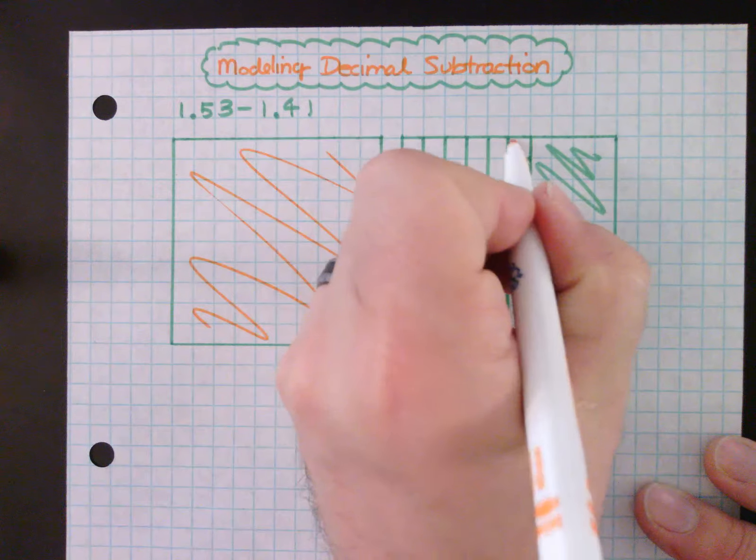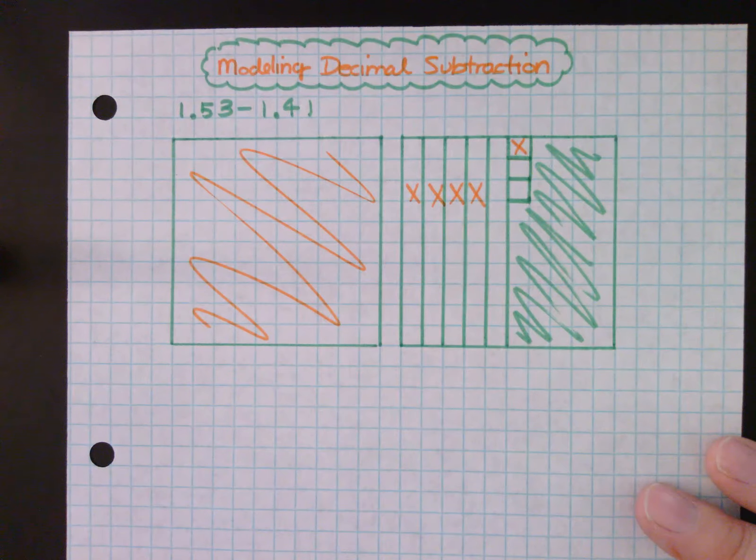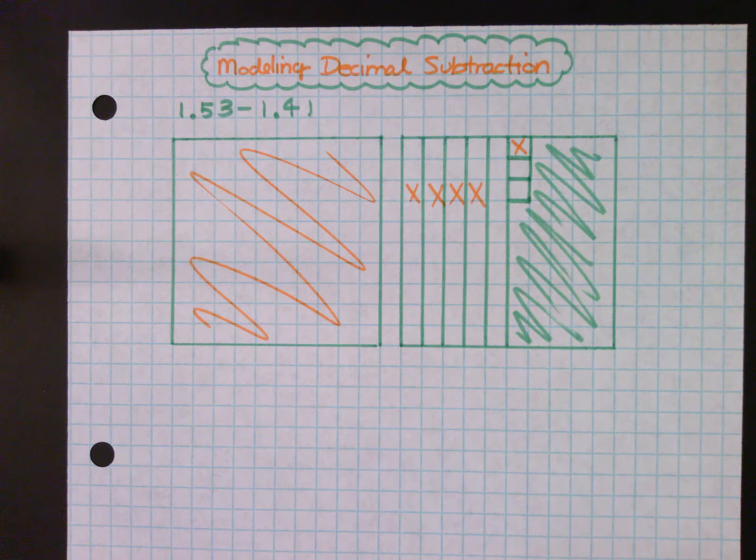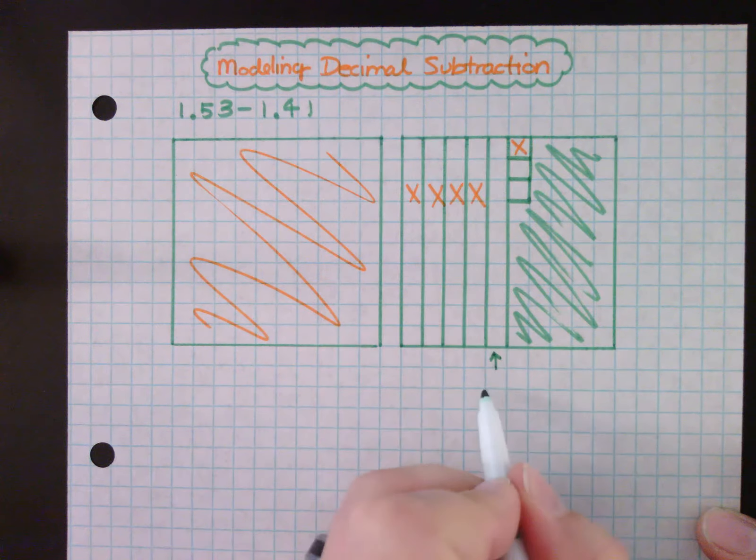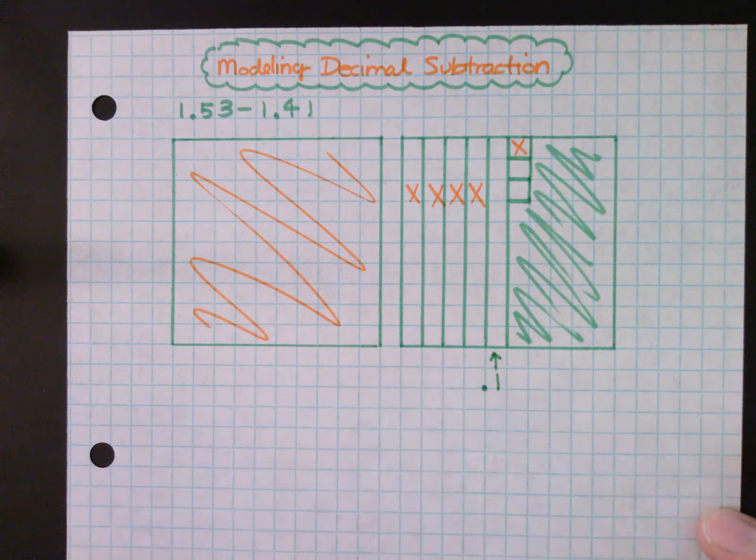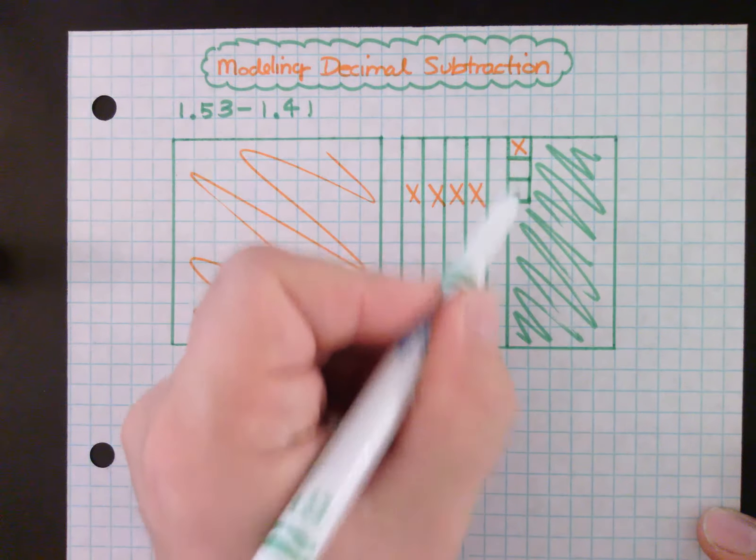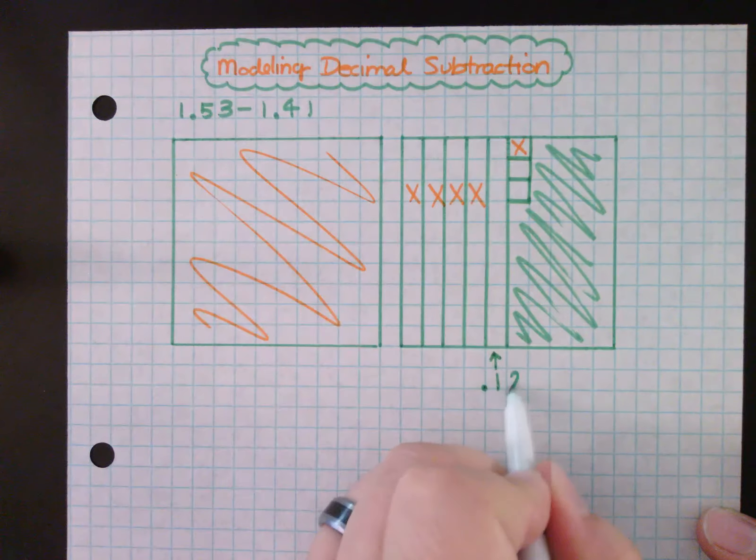Okay, so what's left? Well, all that is left is this one tenth, so that's point one. And I have two one-hundredths, so I put a two in the hundredths place, and so my answer is 0.12.